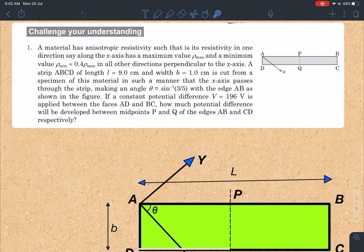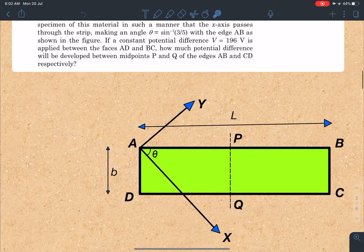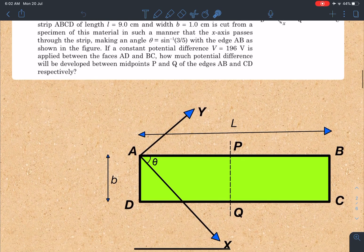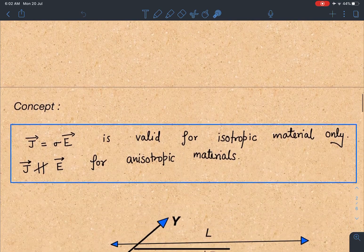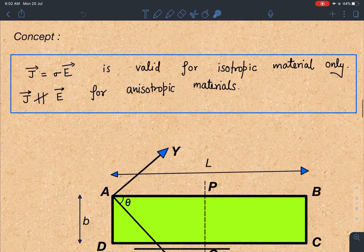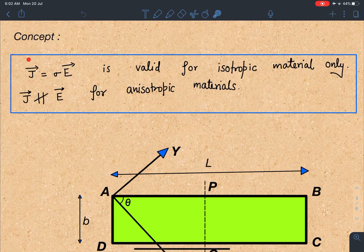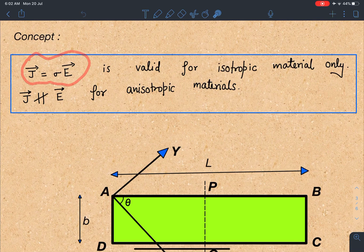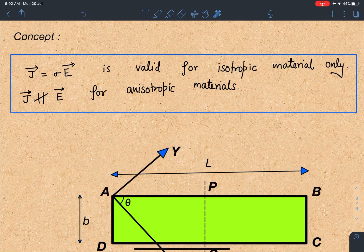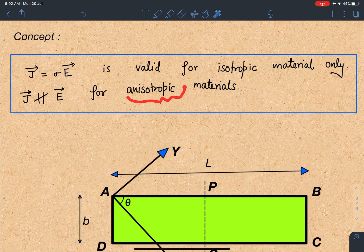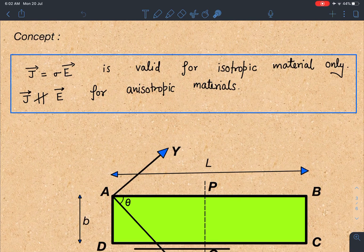Let's discuss the concept part. There is a very interesting fact here. Normally in our plus two syllabus we study that current density and electric field are going to be parallel, but that is true only for isotropic materials. However, this relation is no longer valid for anisotropic materials where resistivity changes in different directions. This is the first point we should know in order to attempt this question.